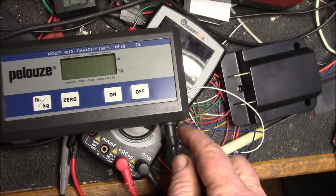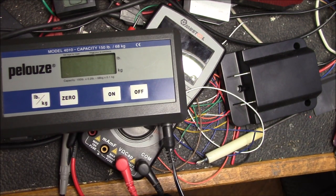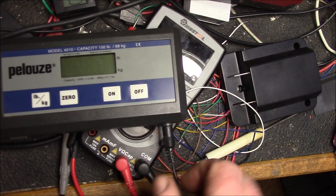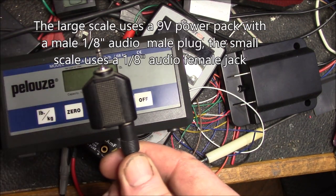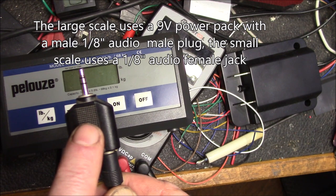They both take 9 volt DC power. I have the 150 pound and then I have the 5 pound and I just plug that into this jack splitter.